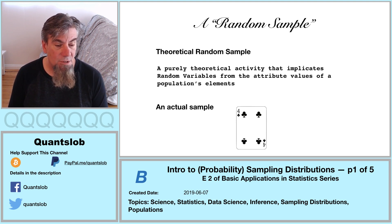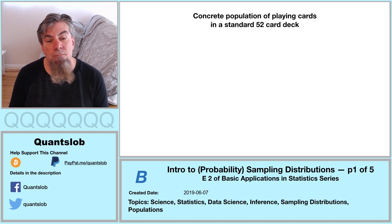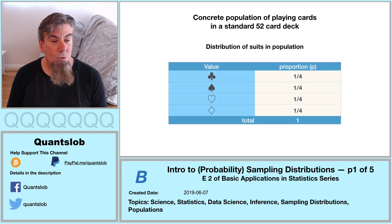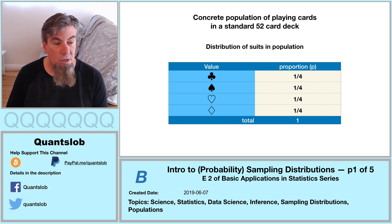For example, the four of clubs here could be a random sample of size one from a standard deck of cards. So let's return to our trusty population of 52 cards. We know our distribution of the suit attribute values in the population.